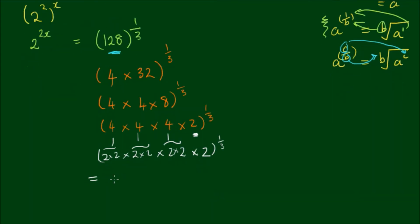So what we have on the right-hand side is 2 to the power of 1, 2, 3, 4, 5, 6, 7 to the power of 1 third. And that's again using rule number 1. We have 2 to the power of 7 times 1 third. Which is equal to 2 to the power of 7 on 3.